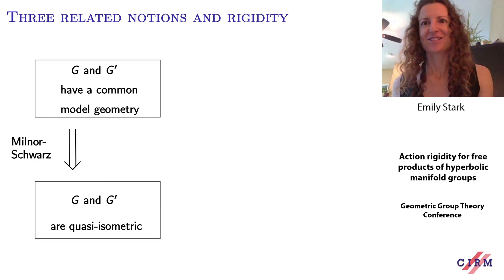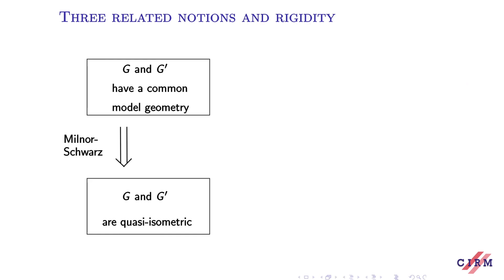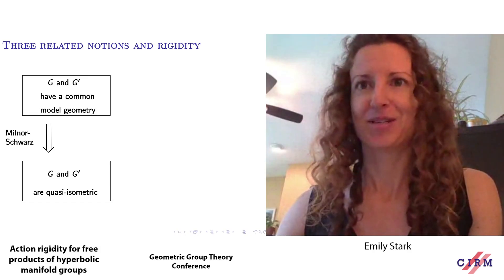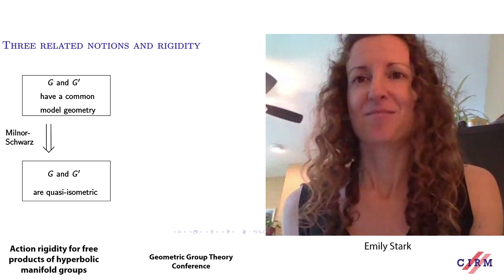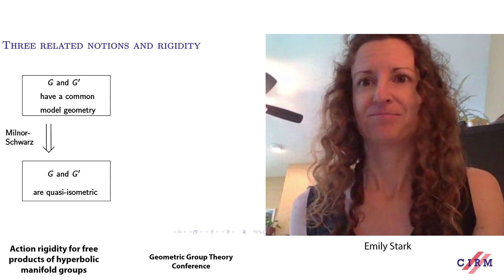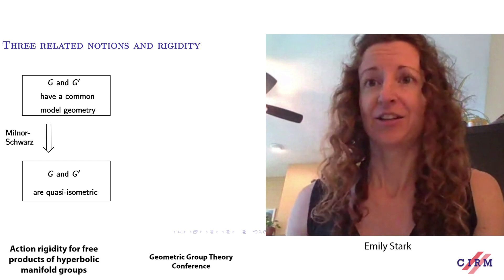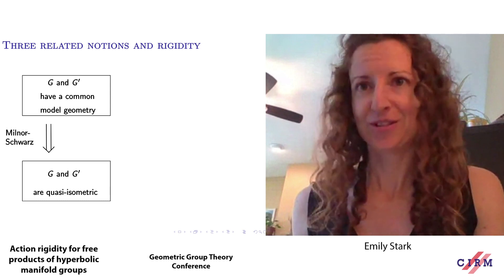This project concerns the following three notions and their relationships. First, we're interested in understanding when two groups G and G prime have a common model geometry, meaning that both groups act geometrically on the same proper geodesic metric space. By the Milnor-Schwartz lemma, this implies that the groups G and G prime are quasi-isometric. The converse fails in general, and it's related to the third notion, which is algebraic.